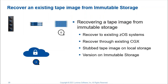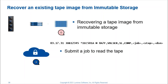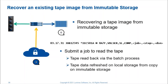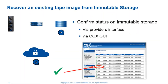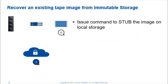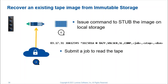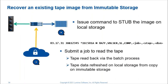Recovery to the existing zDOS environment through the existing infrastructure could not be simpler. Assuming the starting position is that the original source tape image exists as a volume record — it's been stubbed — with a version on immutable storage. Simply submit a batch job to read the tape as normal. The CGX checks the local storage by default, discovers the stub, and goes out to the immutable storage for the data, presenting the tape data for read to the hosts and refreshing the copy on local storage. If the volume on local storage should be specifically refreshed, just check the status on immutable storage either by the provider's interface or the CGX GUI, then stub the volume on local storage and submit the process to read the tape. The tape can be read back via the process and the local copy refreshed from the copy on immutable storage.